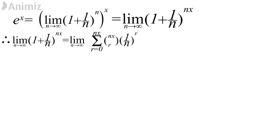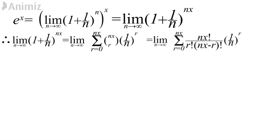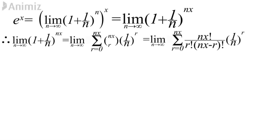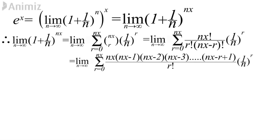Since nx is assumed to be a positive integer, we can break it like the previous expression for e with a few simple changes. The upper limit of the sum becomes nx and the combination becomes nxCr. Breaking the combination as before, we get: lim(n→∞) of the sum from r=0 to nx of [nx·(nx-1)·(nx-2)·...·(nx-r+1)] / [r! · n^r].